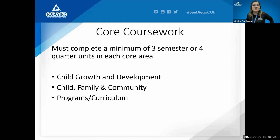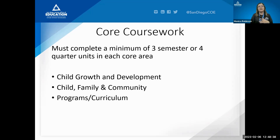What is core coursework? The core coursework for child development permits consists of three particular classes required for all permits at the associate level and higher, depending on the route you take. Option one requires the three core classes: the child growth and development course, the child, family, and community course, and a programs or curriculum course.